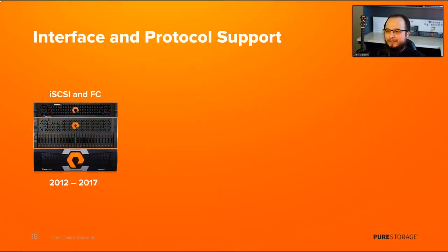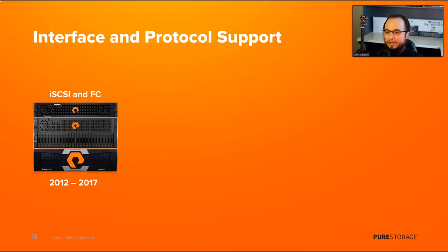Let's talk a little bit about the history of our interfaces and protocol support on the FlashArray. Back in 2012, when we first introduced the FlashArray to the market, we came to market with enterprise-grade iSCSI and Fibre Channel. Back in those days, Fibre Channel was at 8-gigabit speed, and iSCSI was encroaching on Ethernet speeds of 10-gigabit. Today, those industries continue to evolve with Fibre Channel coming up on 64-gigabit, and iSCSI and Ethernet going into the 50-100-gigabit speeds.